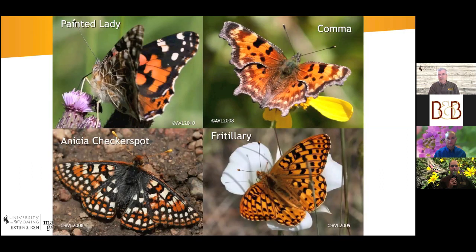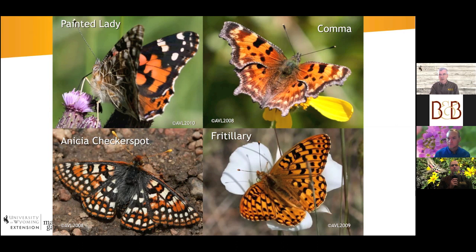Some common species you'll see on Wyoming flowers: painted ladies come through and lay eggs — usually beneficial because they like to lay eggs on thistles, helping control thistle populations, though in very abundant years they can be a pest on bean crops. Commas are a neat early-season butterfly you can see in forests. Checkerspots, fritillaries — many different species. People like to photograph them because they're so beautiful and the settings are often beautiful too.